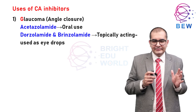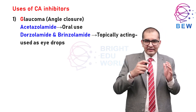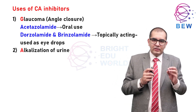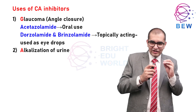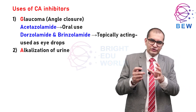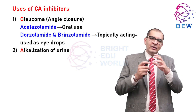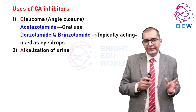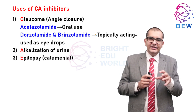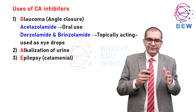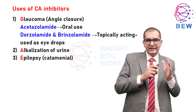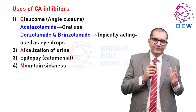The second clinical use is to cause alkalinization of the urine — for urinary tract infection or to promote excretion of certain acidic drugs, as acidic drugs precipitate out in alkaline urine. The third use is in epilepsy, as an adjuvant in absence seizures when primary drugs are not fully effective. Further uses include acute mountain sickness and periodic paralysis.